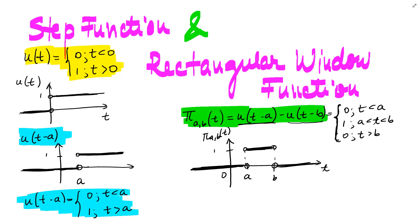In this video we'll talk about step function and rectangular window function. The yellow function u of t equals 0 for t less than 0 and 1 for t greater than 0, with the graph shown below, is the unit step function. The graph is 0 up to t less than 0 and 1 after that.